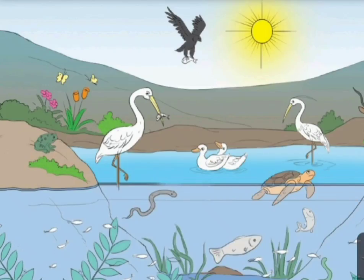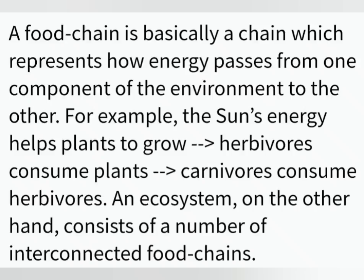This complex interaction of biotic and abiotic environments is known as an ecosystem. The difference between an ecosystem and a food chain is that a food chain represents how energy passes from one component to another — for example, the sun's energy helps plants grow, herbivores consume plants, and carnivores consume herbivores. An ecosystem consists of a number of interconnected food chains.